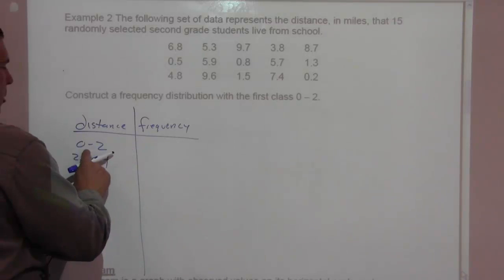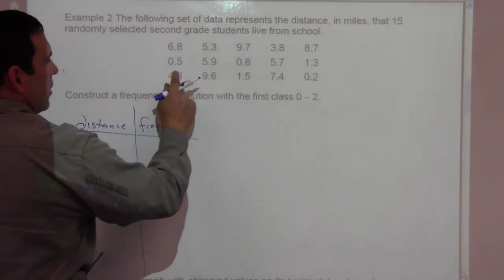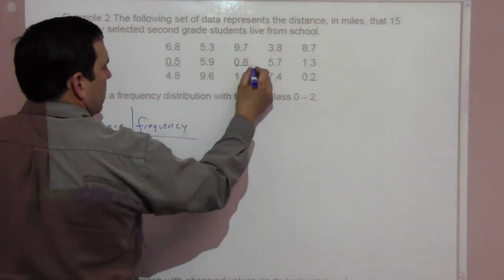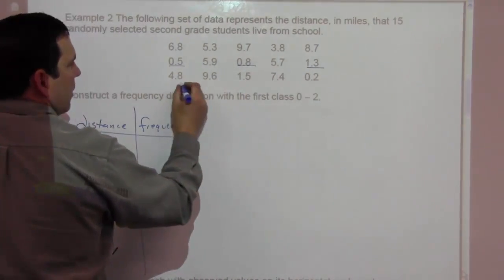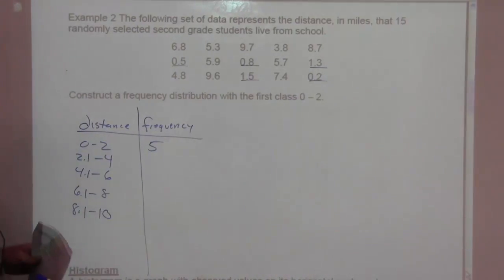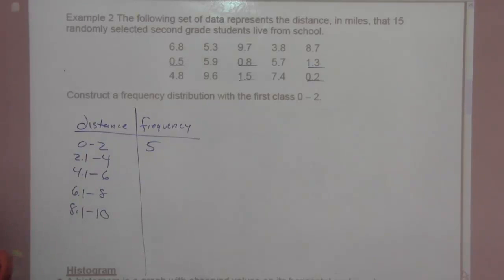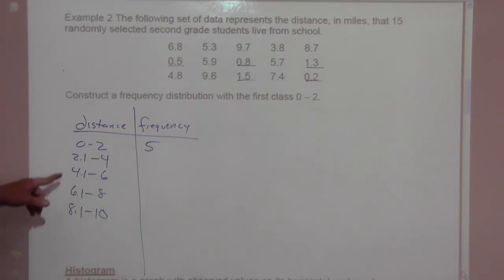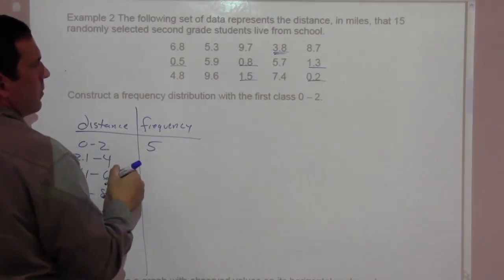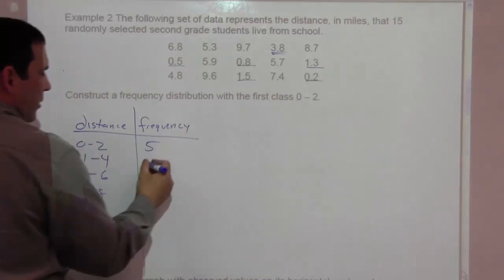So, frequency. How many people are zero to two? Let's see, we have one, two, three, four, and five. So five students are between zero and two miles away from school. How many students are two point one to four miles away? Here's one. So it looks like there's one student.